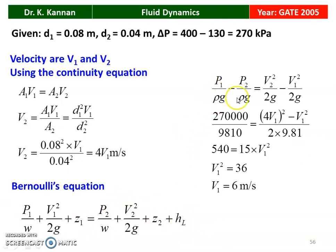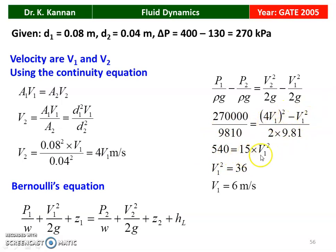Finally, (P₁ − P₂)/(ρg) = V₂²/(2g) − V₁²/(2g). Substituting: 270,000/9,810 × (2 × 9.81) = (4V₁)² − V₁² = 15V₁². Numerically, 540 = 15V₁². So V₁² = 36 and V₁ = 6 meters per second. The velocity of water in the pipeline is 6 meters per second.